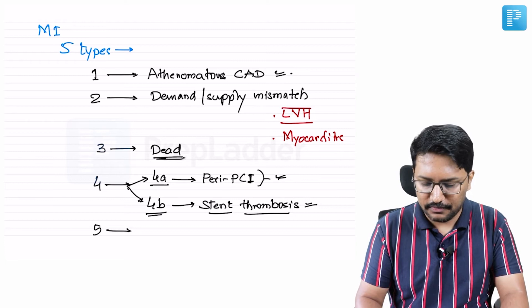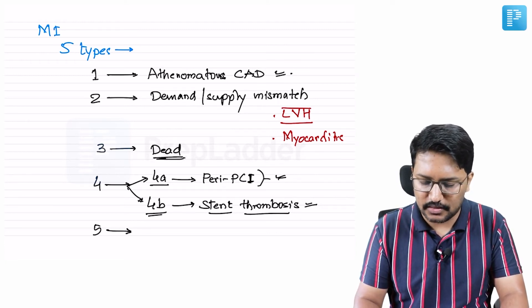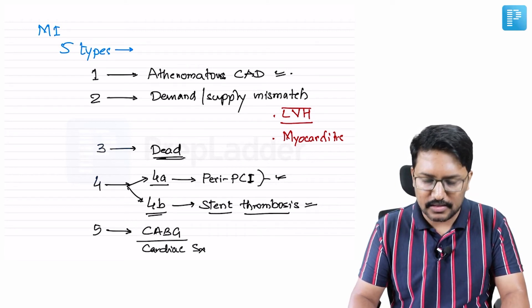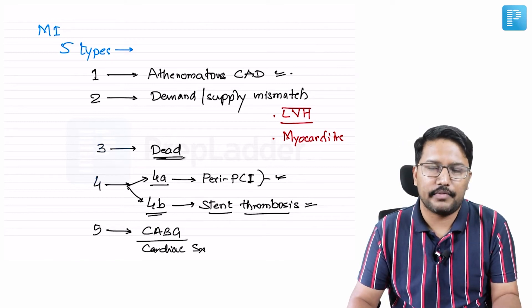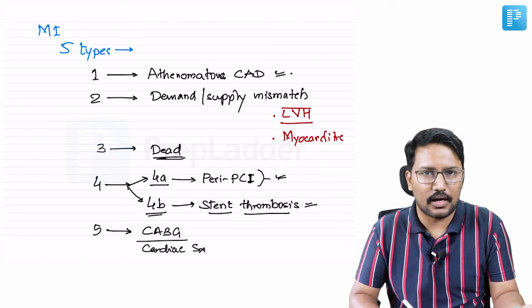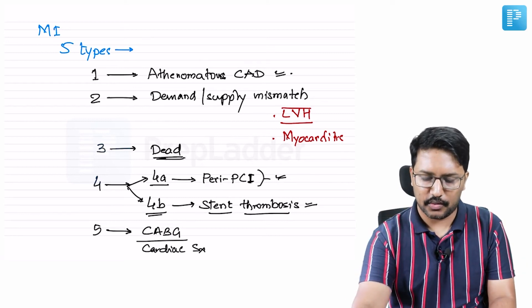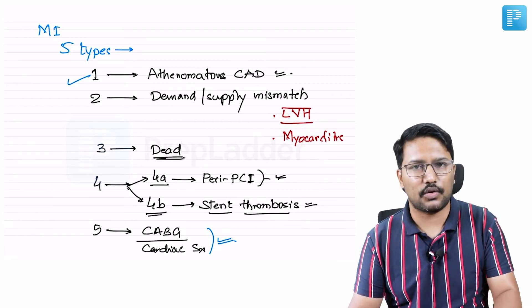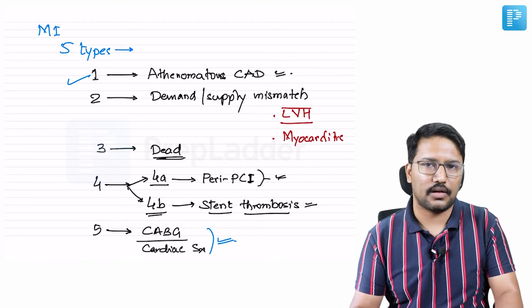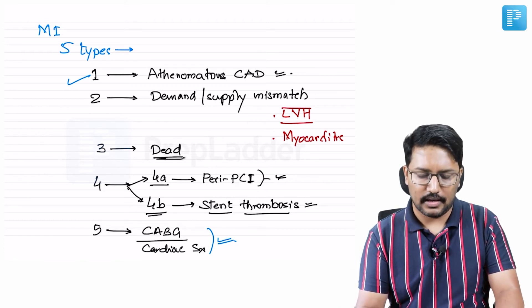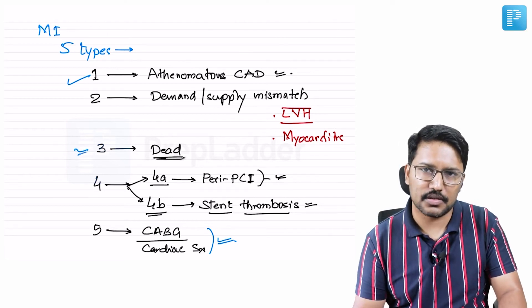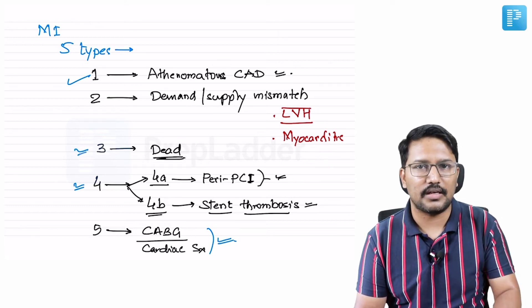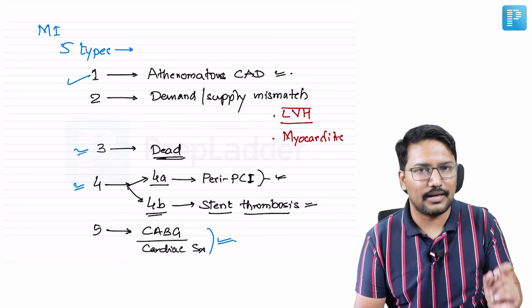Type 5 myocardial infarction is where the patient develops MI as a consequence of CABG or cardiac surgery. During cardiac surgery or CABG, there is increased risk of MI because coronary perfusion can be compromised and the patient may spend significant time on the heart-lung machine. To recap: Type 1 — atheromatous CAD; Type 2 — demand-supply mismatch without atheromatous CAD; Type 3 — patient dead, circumstances suggest MI; Type 4a — complication of PCI; Type 4b — stent thrombosis; Type 5 — complication of CABG.